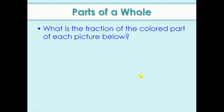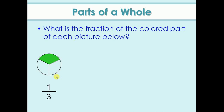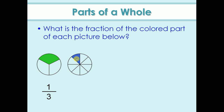Look at another example. What is the fraction of the colored part of each picture below? Here, one part is colored and total parts are three, so the fraction is one by three — because one is colored and the total parts are three. In the next picture, one part is colored and the total parts are eight, so the fraction is one by eight.